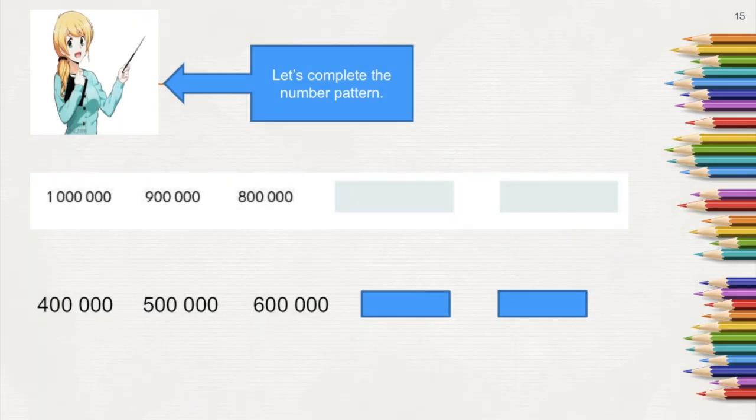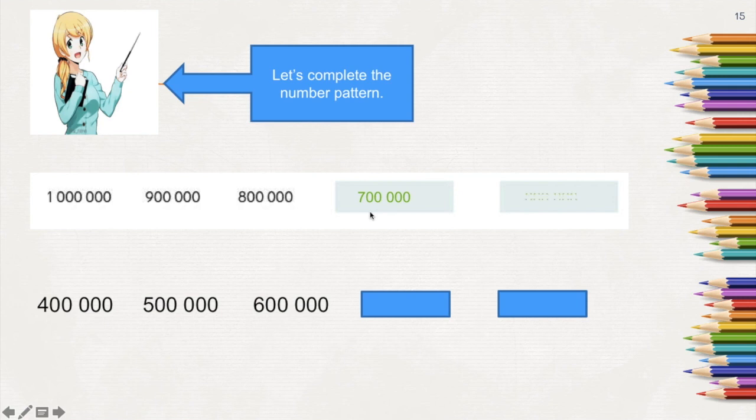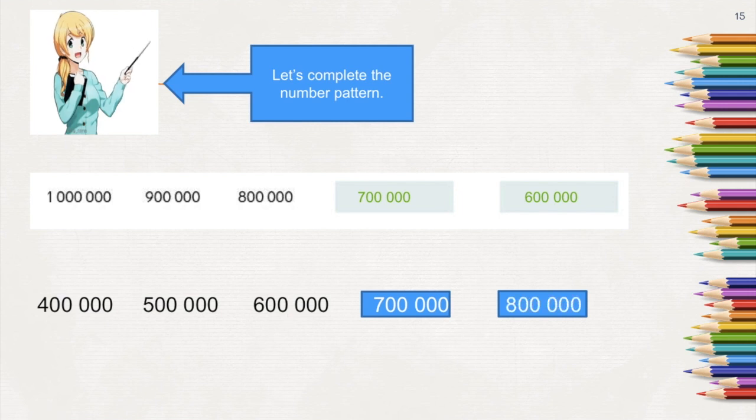Complete this number pattern: 1,000,000, 900,000, 800,000. Going backwards by 100,000, the next number would be 700,000 and 600,000. Let's do the opposite. Let's count forward by 100,000: 400,000, 500,000, 600,000, 700,000, and 800,000.